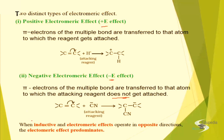Suppose both inductive effect and electronic effect operate on the same molecule and they have opposite directions. Then how do you decide whether the electronic effect will dominate or the inductive effect will dominate? Inductive effect was a partial shift of electron, whereas the electronic effect is the complete shift of the electron. That is why the electronic effect will predominate. Whenever both effects are operating in opposite directions and ambiguity arises, we will decide on the basis of the electromeric effect.